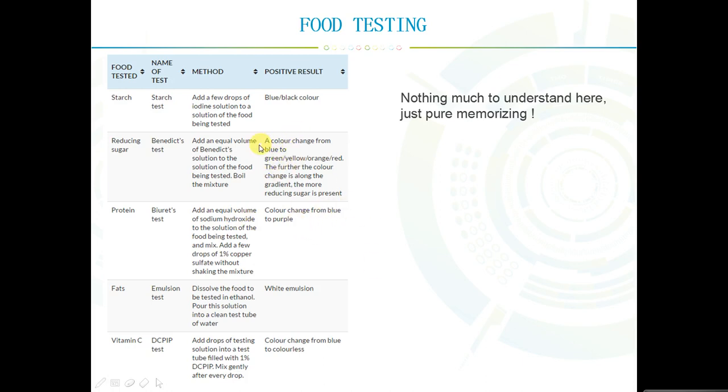If there is any reducing sugar present, there's going to be a color change from blue, which is the original color of the Benedict's solution, to green or yellow, orange or red. There's a variety of colors here. The further the color change is along the gradient of colors, the more reducing sugar is present. You can actually determine not only whether it was present or not, but just how much as well.